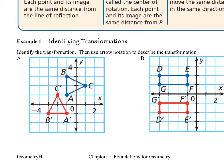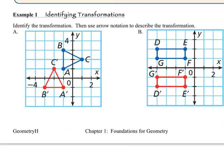Okay, let's take a look at example number one. We want to be able to identify the transformation. The instructions say identify the transformation, then use arrow notation to describe the transformation.